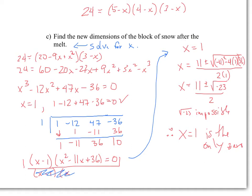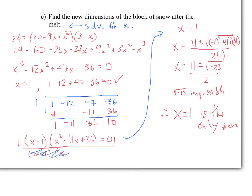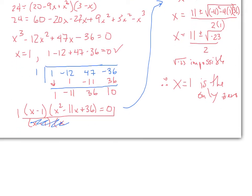Since X = 1, we can find the new dimensions of the block: 5 − 1 = 4 meters, 4 − 1 = 3 meters, and 3 − 1 = 2 meters. So the new dimensions are 4 meters by 3 meters by 2 meters. Notice that 4 × 3 × 2 = 24 meters cubed, which confirms our answer.